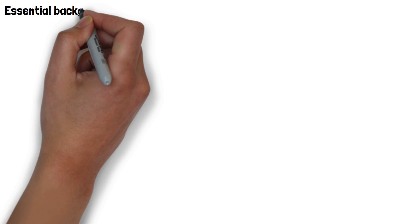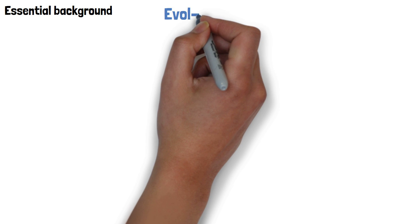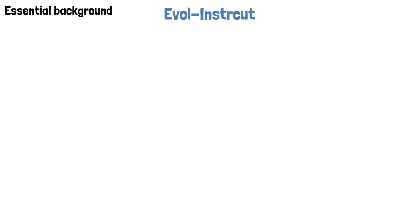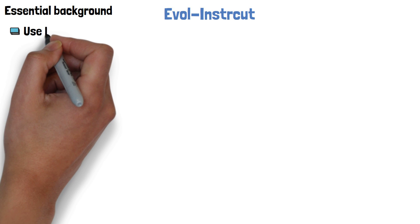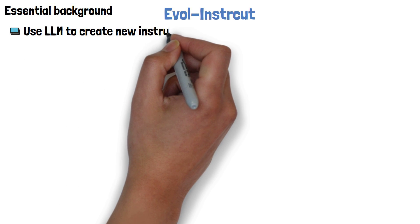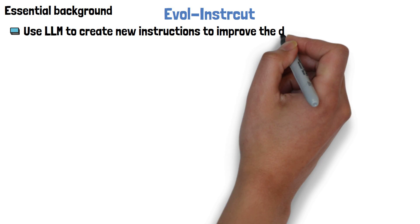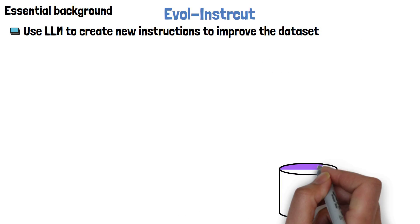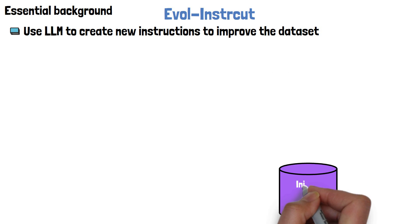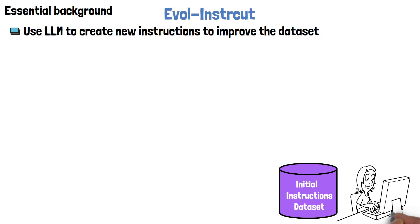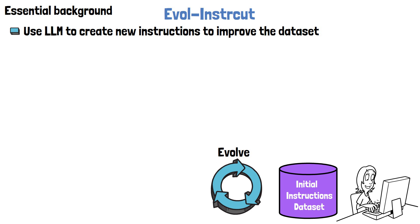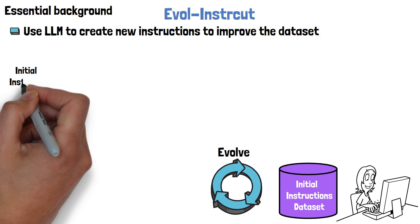Before proceeding to the next steps, we need to cover an essential background: EvolInstruct, which was covered in a previous video and is covered here again because it is essential for steps 2 and 3. EvolInstruct is a method to create new instructions using a large language model. We start with an initial dataset of instructions, which are usually manually crafted, and using EvolInstruct we evolve the dataset. In each step we take an initial instruction.